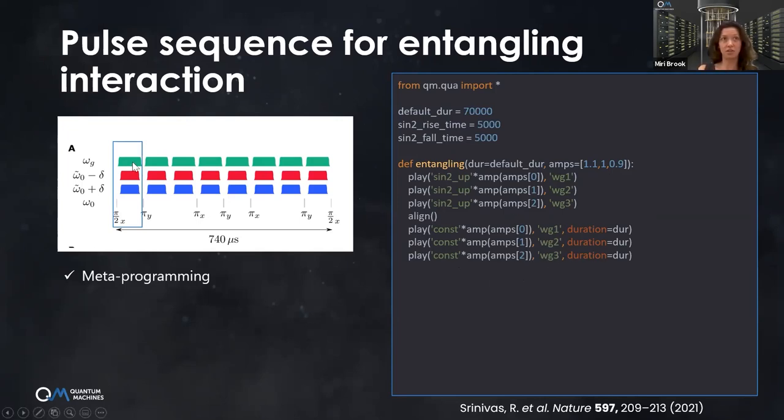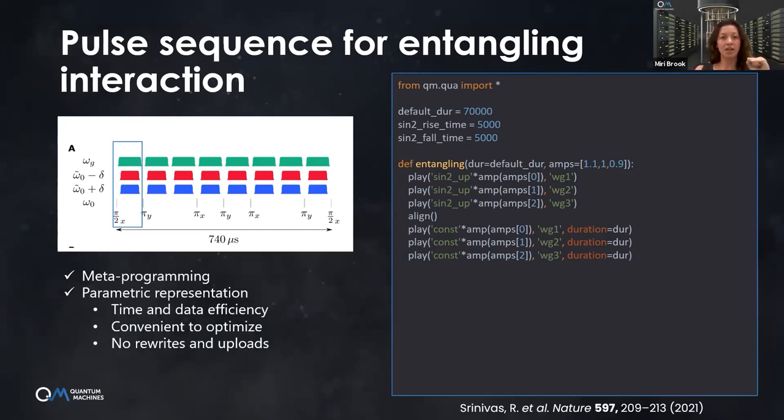Actually I can change any parameter of this sequence and check my performance without rewriting the code and without waiting for the program to be uploaded again from my PC to the controller, because everything is parametric. I can optimize over every parameter very, very easily. It's a very powerful tool. Next we ramp everything down. This is how it looks in reversed order.